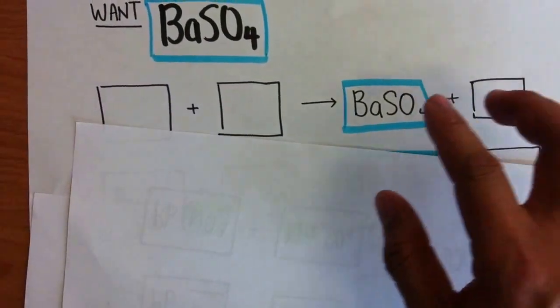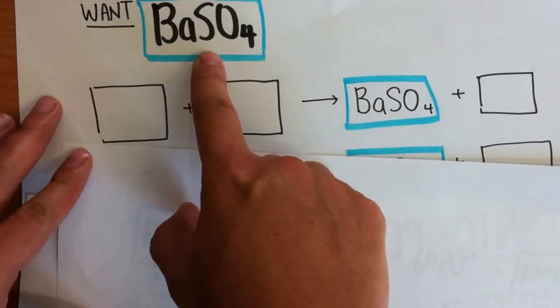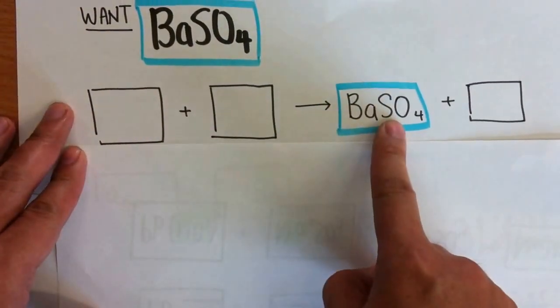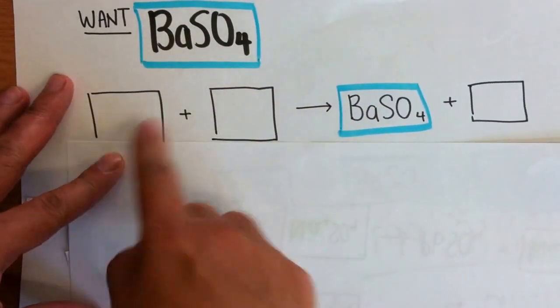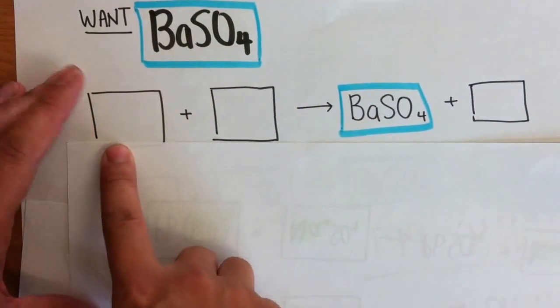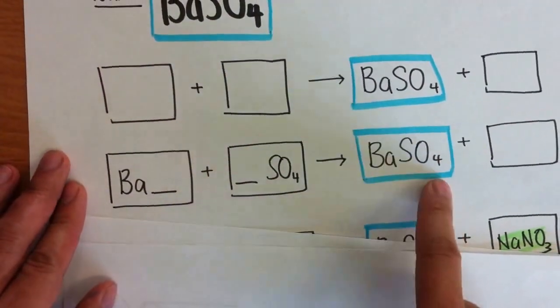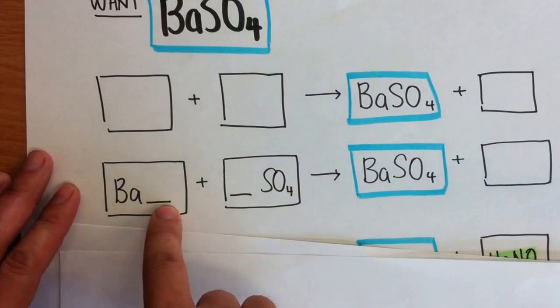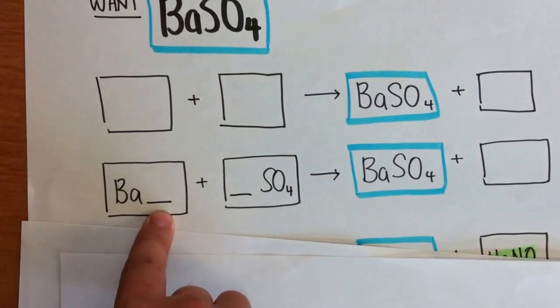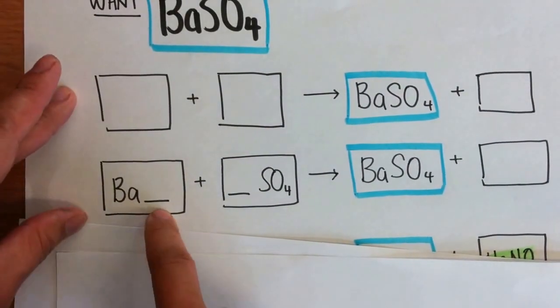Okay, another example. Now, this is another insoluble salt. This is what I want. What should I do? Step 1, separate this out. Ba, SO4. This is what I want. So what should I put here? Barium, what is aqueous? So choose.